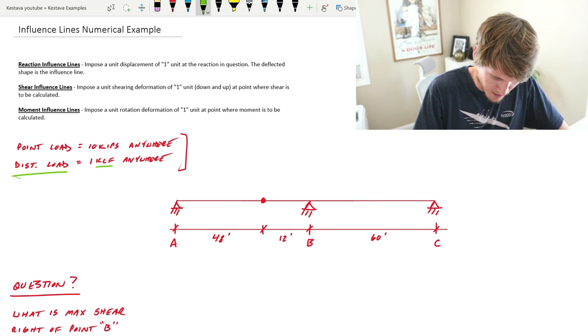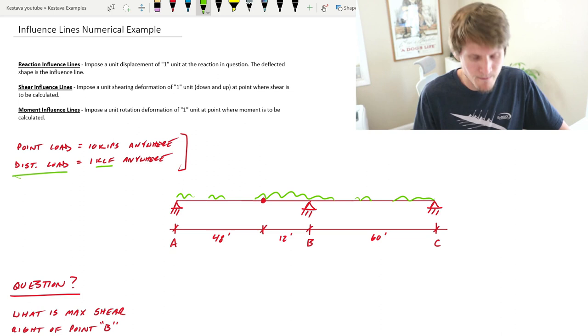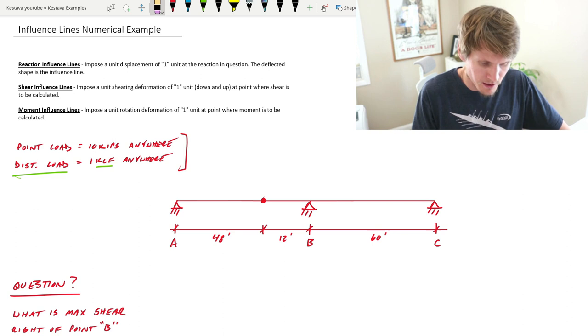You get the point - you could have any of those combinations of distributed loading along your system. Where are the worst case scenarios when that's applied that creates our worst shear, moment, and reactions?